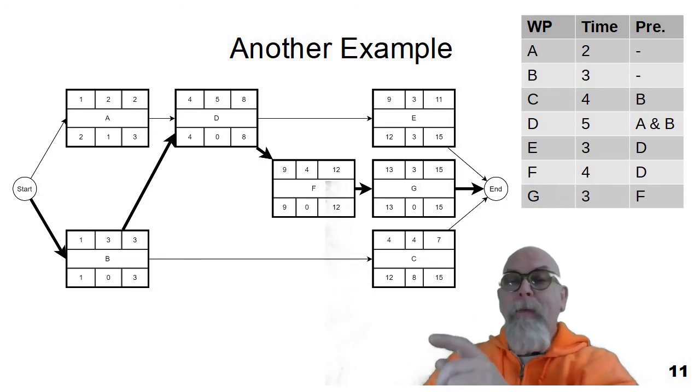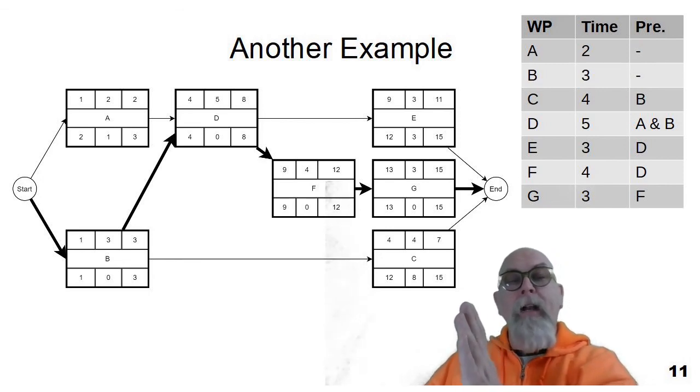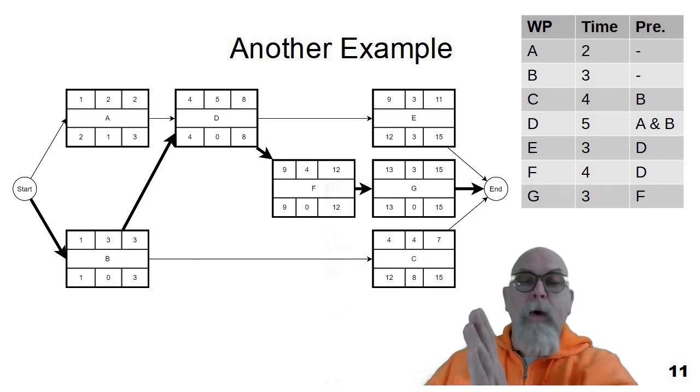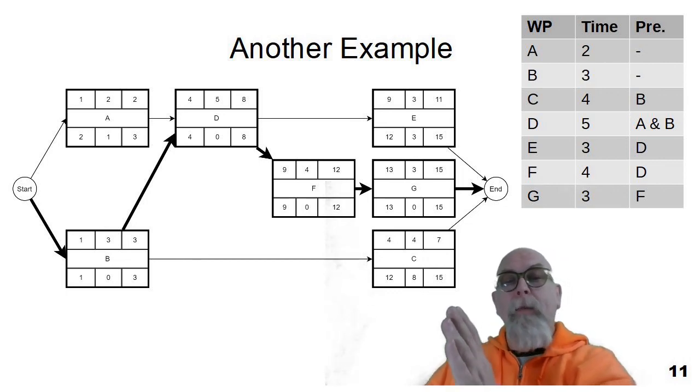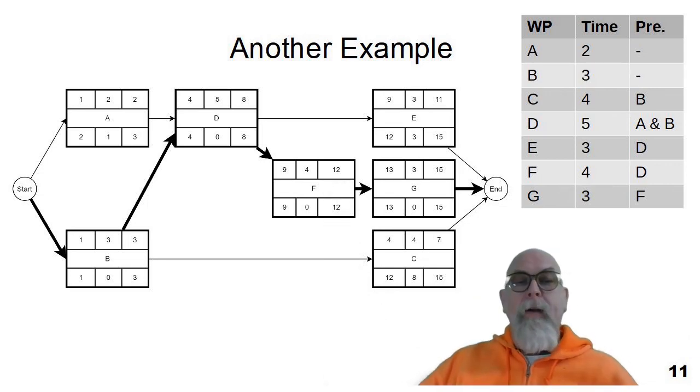We go from start to B to D to F to G. And you can see slacks of zero, where task A has a slack of one. So we can slide back and forth, either starting on the first week or the second week, without causing any problems to the project. Task E could start anywhere between the ninth and twelfth week. And task C can start anywhere between the fourth and the twelfth week. So we have wiggle room to schedule our employees better, knowing all of this with early start, early finish, late start, late finish, and slacks.